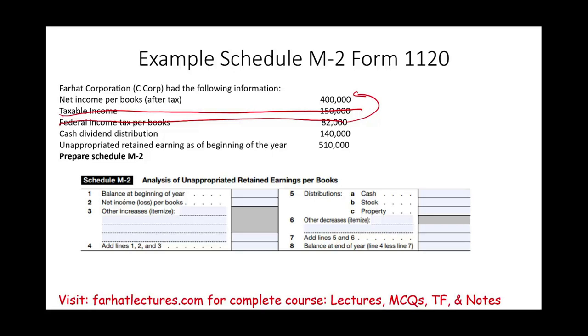So how do I prepare my Schedule M-2? Well, I start with beginning retained earnings, $510,000. This is my beginning retained earnings. Then I'm giving net income per books, $400,000. There was no adjustments. If there's any adjustments for any reason, it will be listed here. Beginning retained earnings plus net income equal to $910,000.